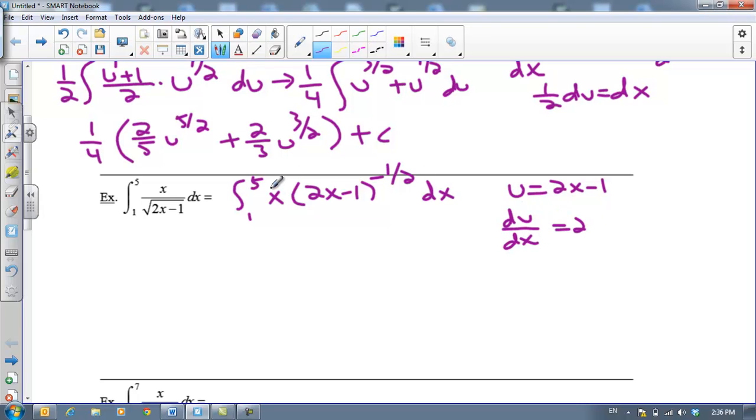But again we have to substitute for this x. So x equals (u + 1)/2. Now I also have to deal with my bounds of integration. So when x equals 1 from this equation right here when x equals 1 you plug it in and you get that u also equals 1. And then when x equals 5 we're going to get that u equals 2 times 5 is 10 minus 1 is 9.